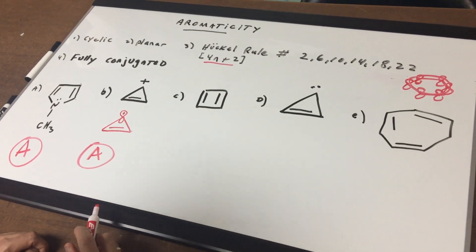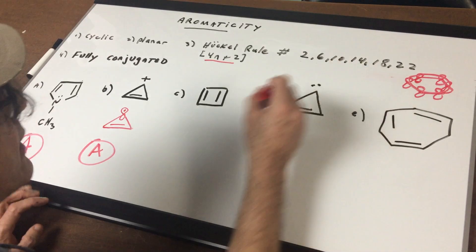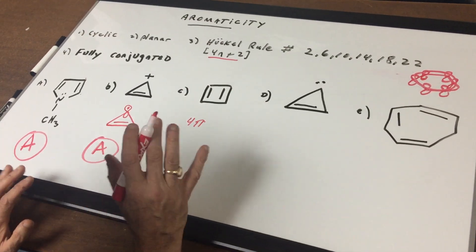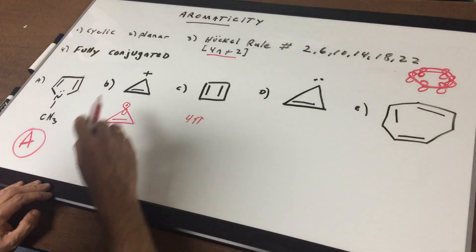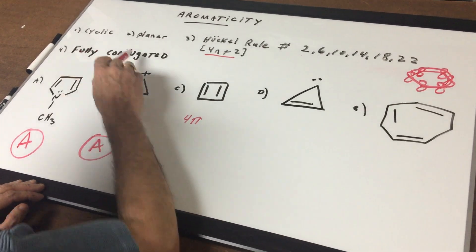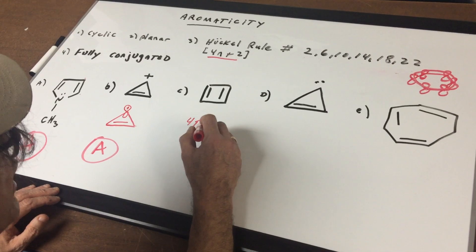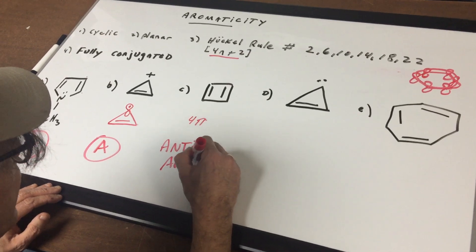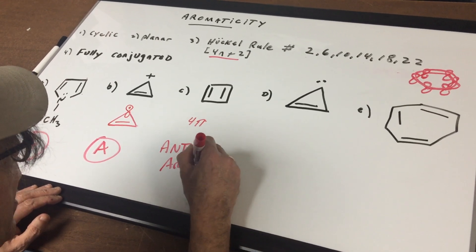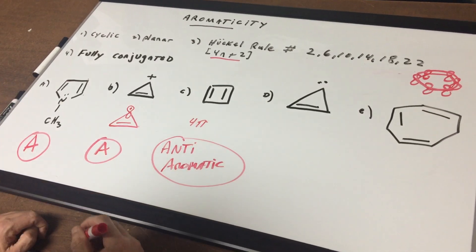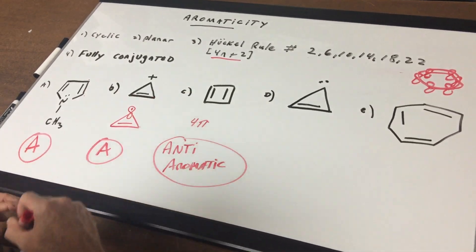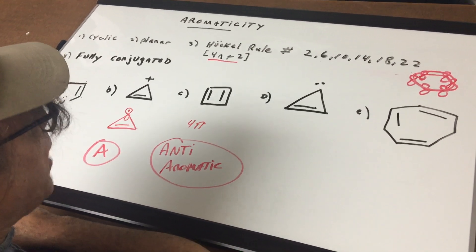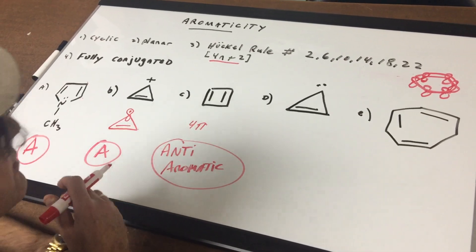Now we come to something with 4 pi electrons. Notice 4 is not a number. Remember, if you ever see a 4 pi electron system, I want you to be very careful. If it's cyclic, this is, it is planar. It is fully conjugated, but you have 4 pi electrons. That is the kiss of death. That is called anti-aromatic. And that means that this molecule is very reactive and very unstable. So this is anti-aromatic. My professor used to call this molecule the beast. It is known as cyclobutadiene. And it is one of the most reactive molecules in all of organic chemistry. And it's anti-aromatic.